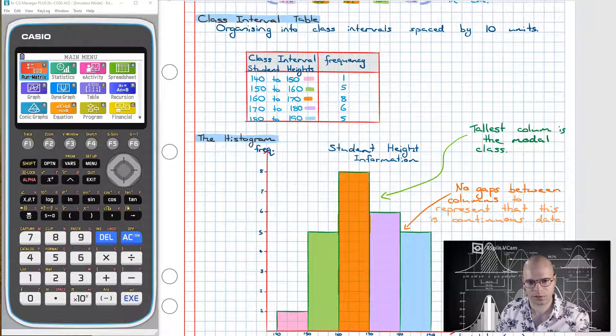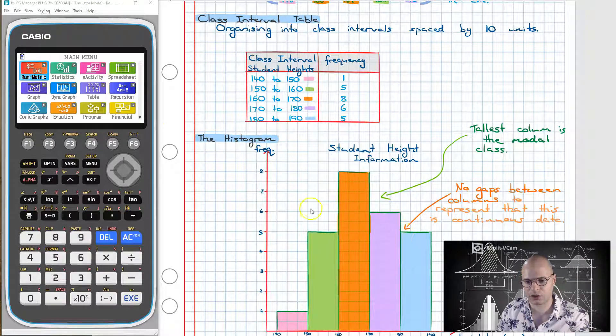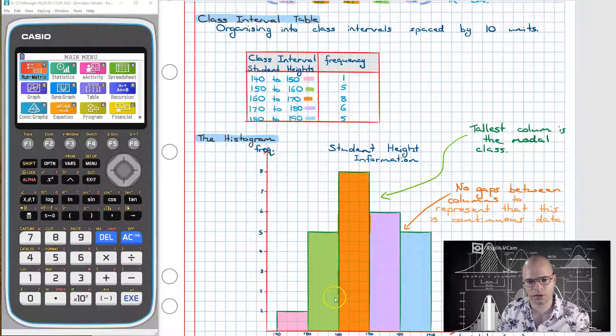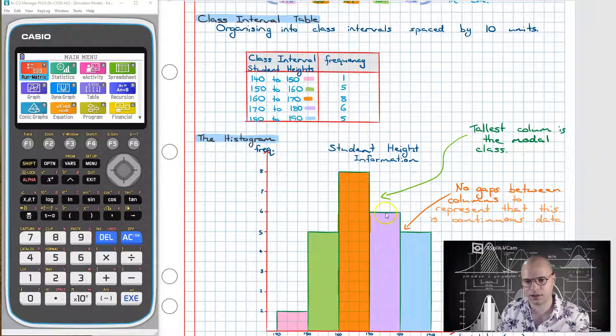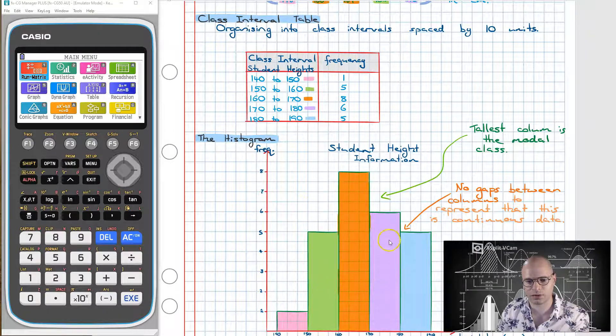Welcome to this video on the topic of statistics. In this video we're going to have a look at how we can use our graphical calculators to draw histograms as shown over here for us. To do this we're going to use the data that we had in the previous video to then generate the same graph that we have over here.